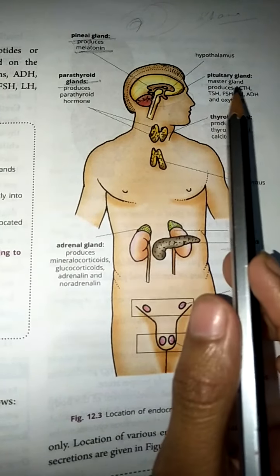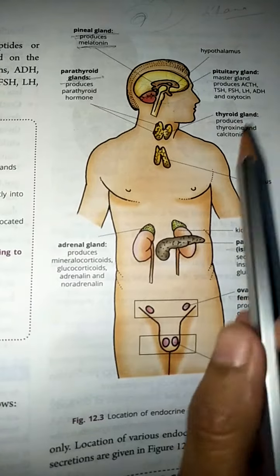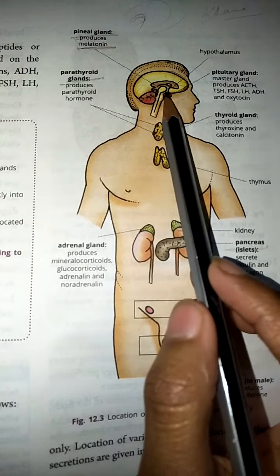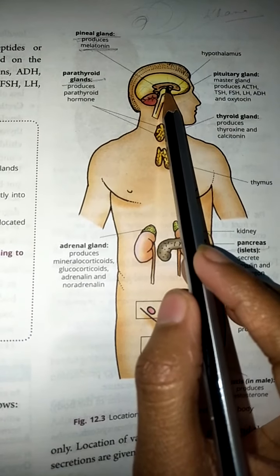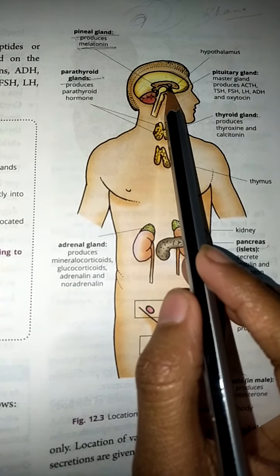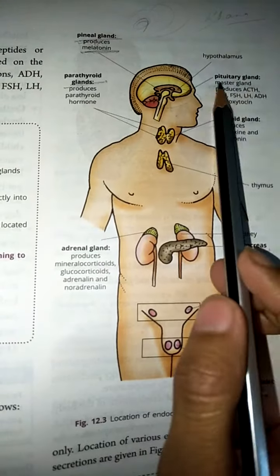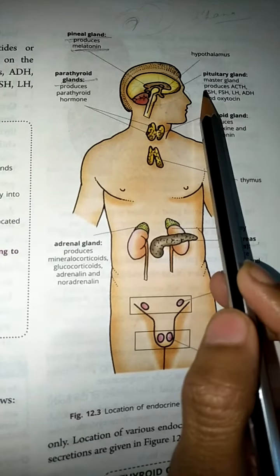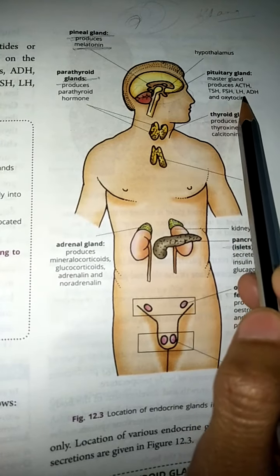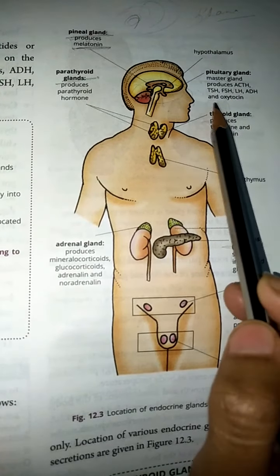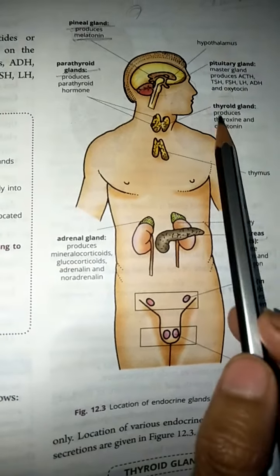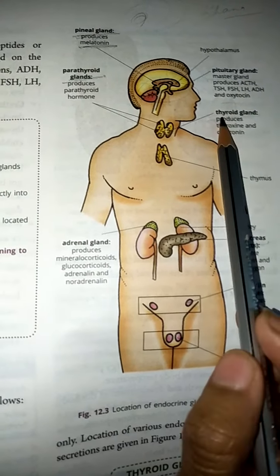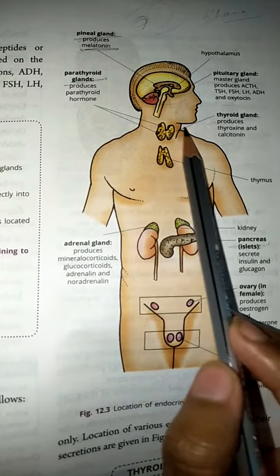The pituitary gland regulates the activities of other glands. It is also located in the central nervous system, in the brain. This gland produces different types of hormones: ACTH, TSH, FSH, LH, ADH, and oxytocin. The third one is the thyroid gland, which produces thyroxine and calcitonin, and is located in the neck region.